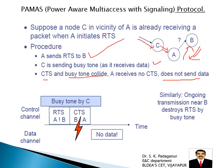In this scenario, the CTS from B and the Buzitone from C collide on the control channel. Even though there is a collision, this does not necessarily prevent A from sending data to B. As shown in the diagram, the Buzitone from C, and the RTS and CTS, all collide in the control channel — so no data will be sent. This is the key concept of the PAMAS protocol.